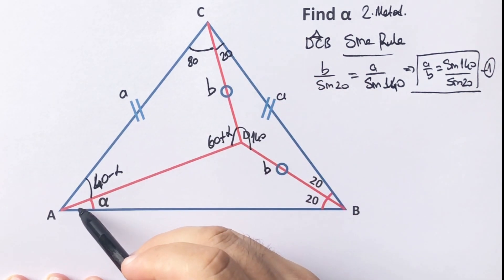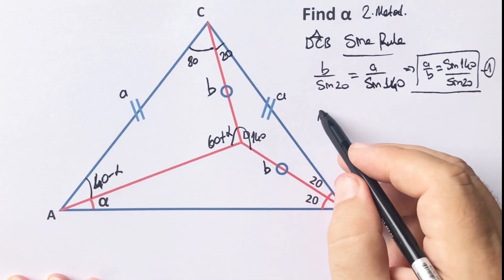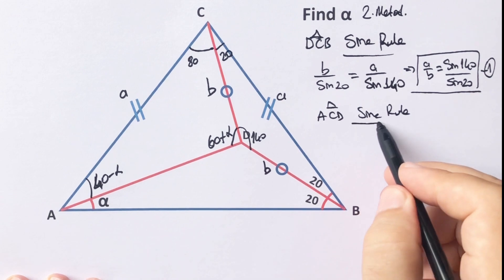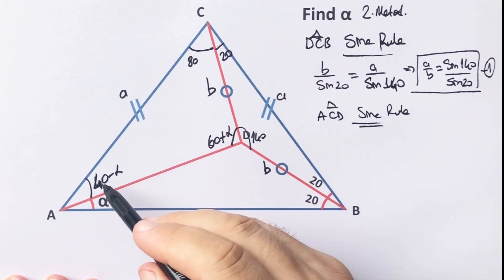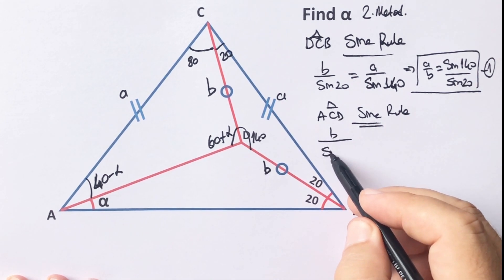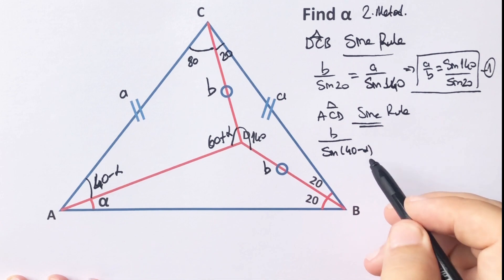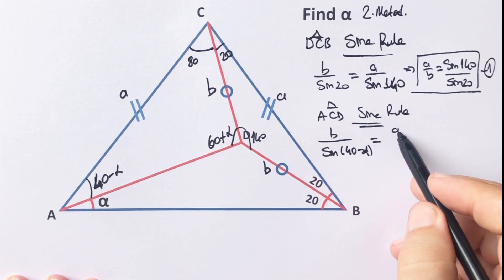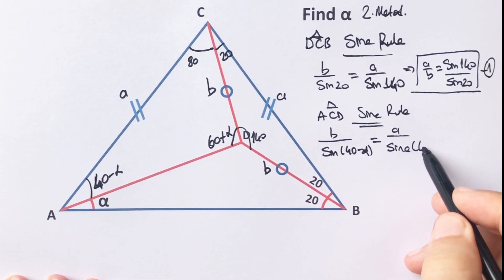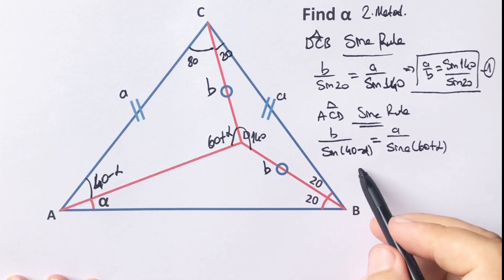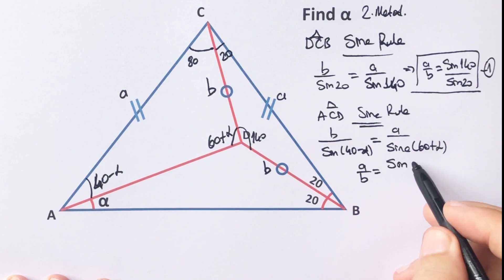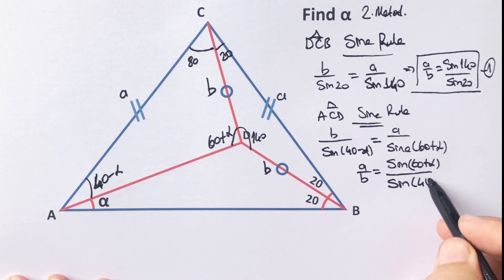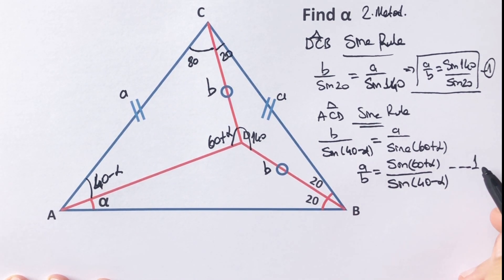For the other triangle, if we apply the sine rule one more time: b over sine(40 minus alpha) equals a over sine(60 plus alpha). Therefore a over b equals sine(60 plus alpha) over sine(40 minus alpha). This is the second equation.